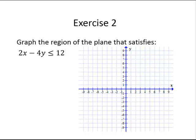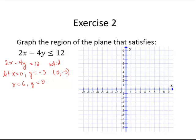Let's try another one: 2x minus 4y is less than or equal to 12. Again, I am going to think of this as the equation 2x minus 4y equals 12, and I would use a solid line since it is an or-equal-to inequality. This equation is in standard form, so it is easier to graph by finding intercepts. If x equals 0, then y equals negative 3, giving the point (0, -3). If y equals 0, then x equals 6, giving the point (6, 0). Plotting these points and drawing the line through them.